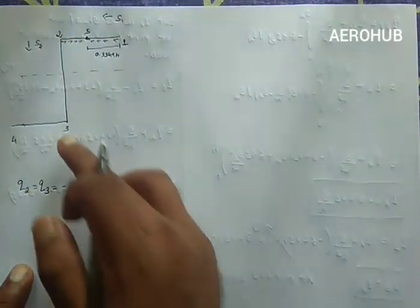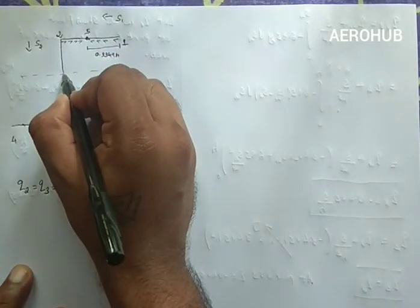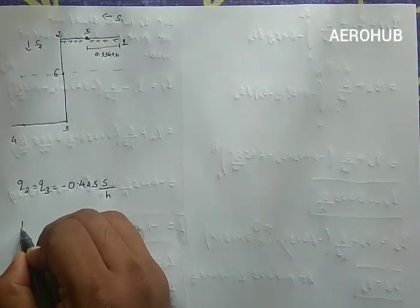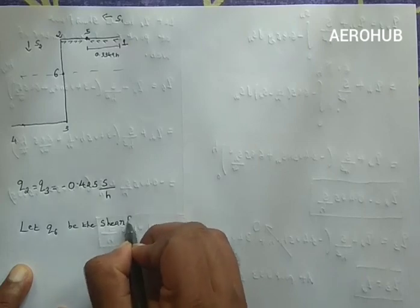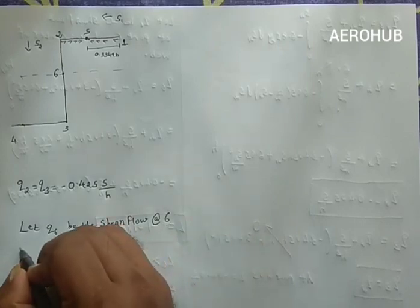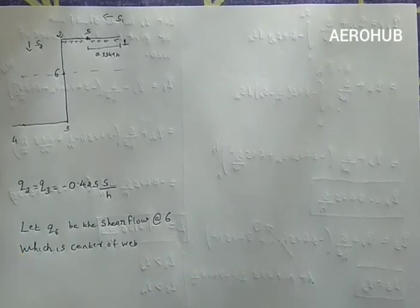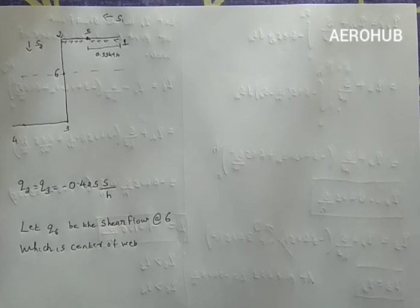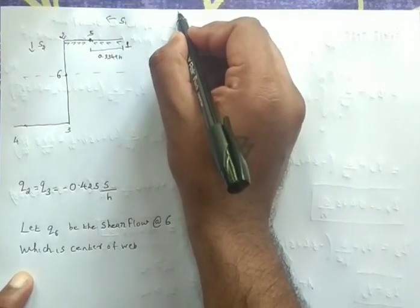At points 0.2 and 0.3, the shear flow is constant, but that doesn't mean the shear flow is always constant throughout the web. We'll find out the shear flow at point 0.6, which is the center of the web. The shear stress distribution will be maximum at the centroid or neutral axis — in bending, stress is zero at the neutral axis, but shear stress is maximum there. So we should get a maximum value of shear flow at 0.6.